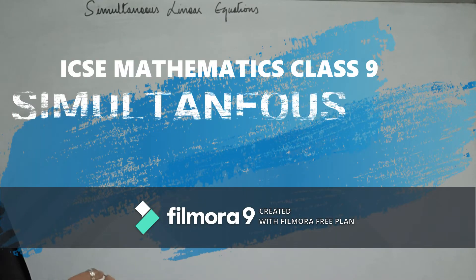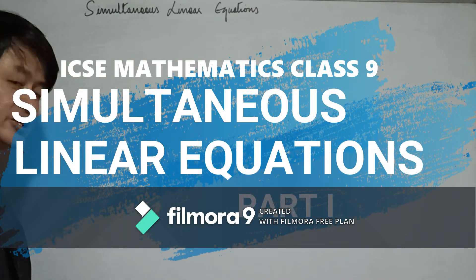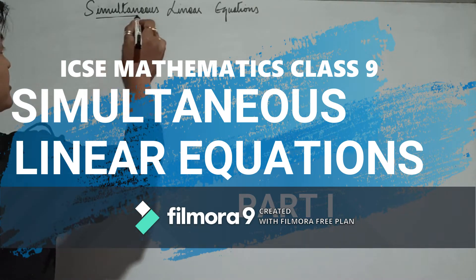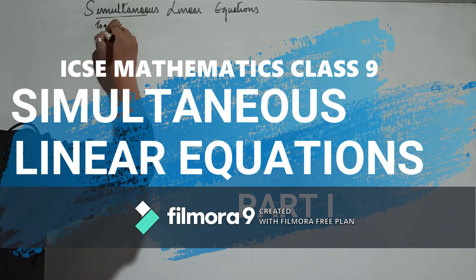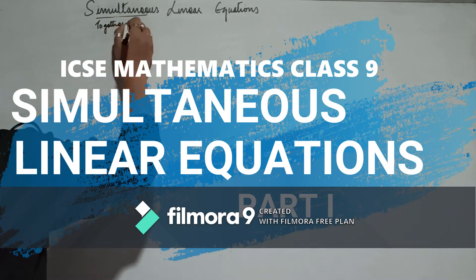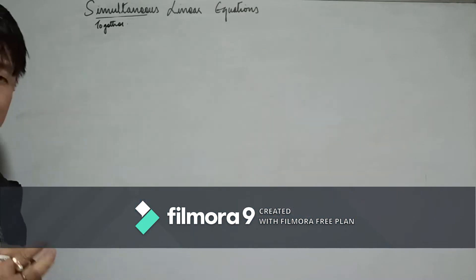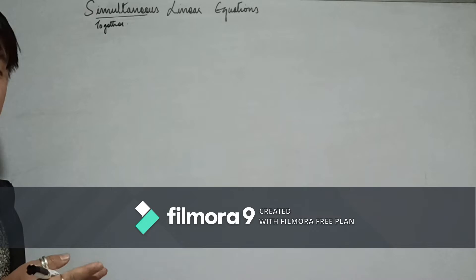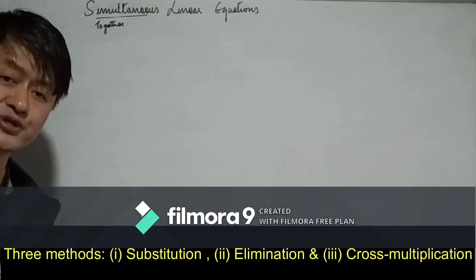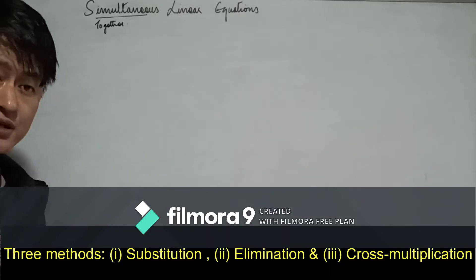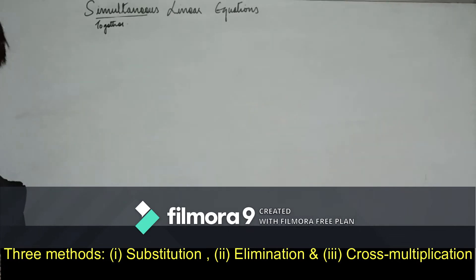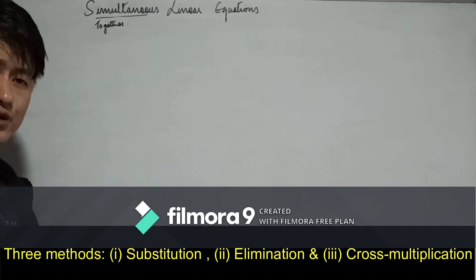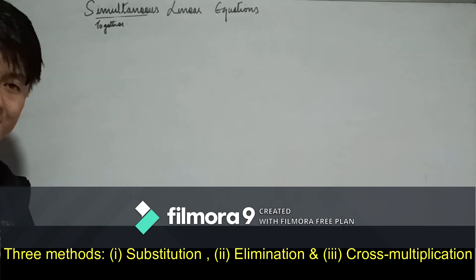Hello, today we are doing simultaneous linear equations of class 9 mathematics. You know that simultaneous means together. In this chapter you will get two equations which we have to solve together. A pair of equations can be solved in three different methods: substitution, elimination, and cross multiplication method. As per the question we have to solve — if nothing is mentioned, you can solve with any method which you find easier.